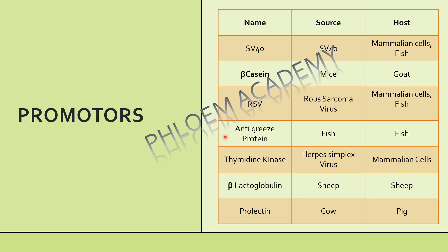Thymidine kinase — its source is Herpes simplex virus and it can be used in mammalian cells. Thymidine kinase can be used as a promoter only in mammalian cells. This is a very, very important point. Next is beta lactoglobulin, which is obtained from sheep and can be used in fish. Next is prolactin. The prolactin promoter is obtained from cow and can be used in fish.